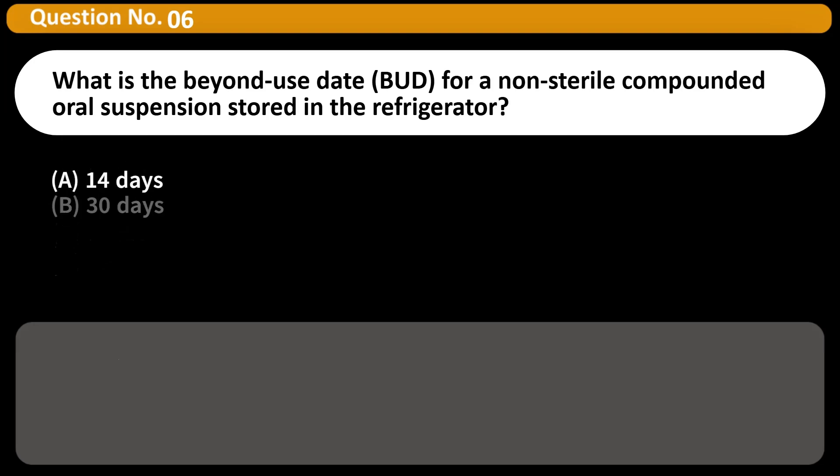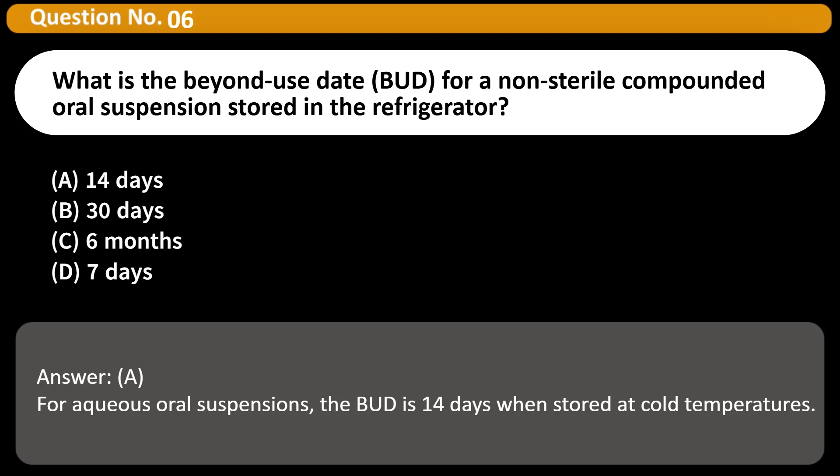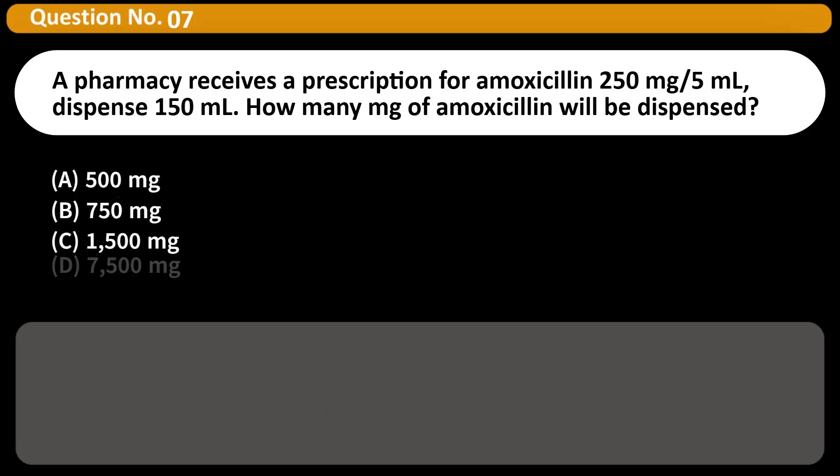What is the beyond-use date (BUD) for a non-sterile compounded oral suspension stored in the refrigerator? A. 14 days. B. 30 days. C. 6 months. D. 7 days. Answer: A. For aqueous oral suspensions, the BUD is 14 days when stored at cold temperatures.